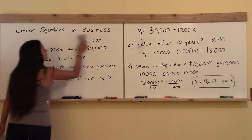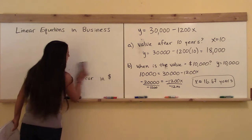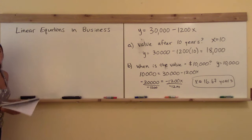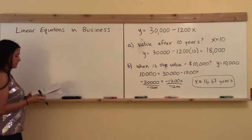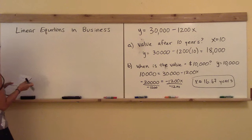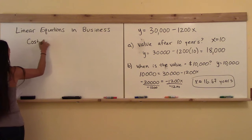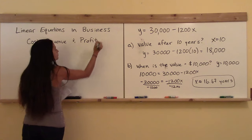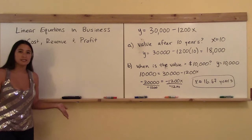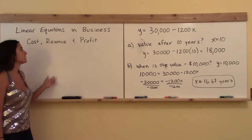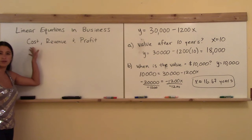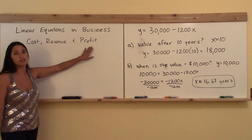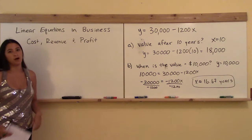A very common application for business is cost, revenue, and profit. These three things usually go together when you're running a business — they are the things you mainly have to keep track of. How much is it costing me? How much money am I making? And what is the difference between those two quantities? That difference is my take-home income — my profit.